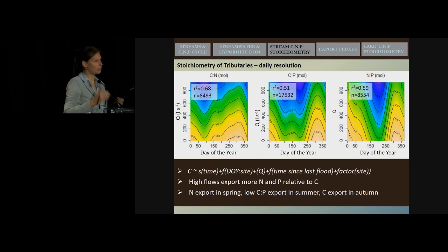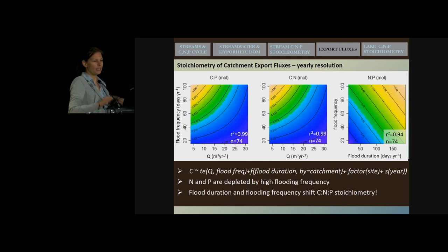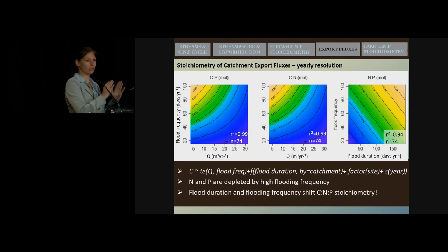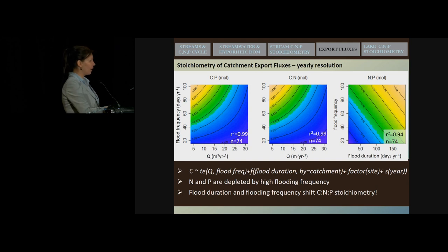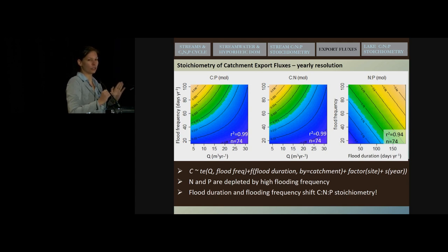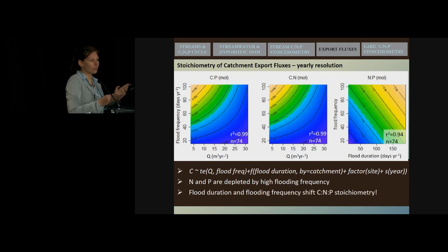If we look at the bigger picture and model the catchment export fluxes — these are the model export fluxes and stoichiometry of the yearly export fluxes — we see that factors like flooding frequency and flood duration matter a lot. Especially in smaller streams, high flood frequency leads to quick depletion of phosphorus and nitrogen. Flood duration and flood frequency interact to determine the nitrogen to phosphorus ratio: at high flood duration and high flood frequency, phosphorus is depleted relative to nitrogen. These factors, all impacted by climatic changes, actually shift the C:N:P stoichiometry.